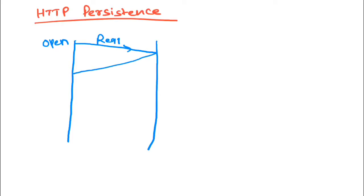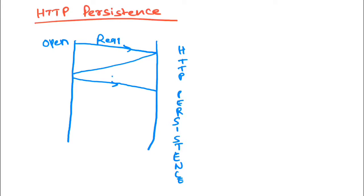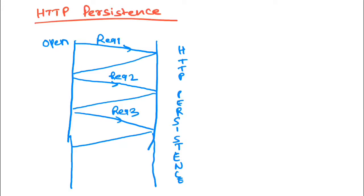When HTTP persistence is enabled on the server side, the server will not close the connection after the response — the connection remains open. The client then sends another request over the same connection, and the response comes back over the same connection. This continues for a period of time; the same connection is used to serve multiple requests. After the configured maximum time has passed, the server decides to close the connection.